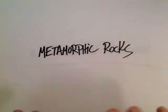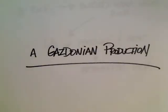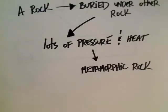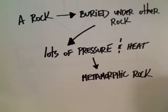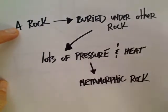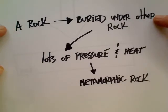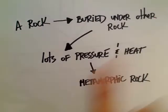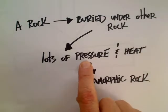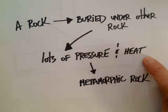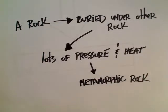Welcome everybody, this is Mr. Gasta and let's get into metamorphic rocks. A metamorphic rock is formed when you have an existing rock that is buried under other rocks — often talking about one mile, two miles, three miles, four miles. That much rock causes a lot of pressure, and that pressure also causes heat, which will form a metamorphic rock.